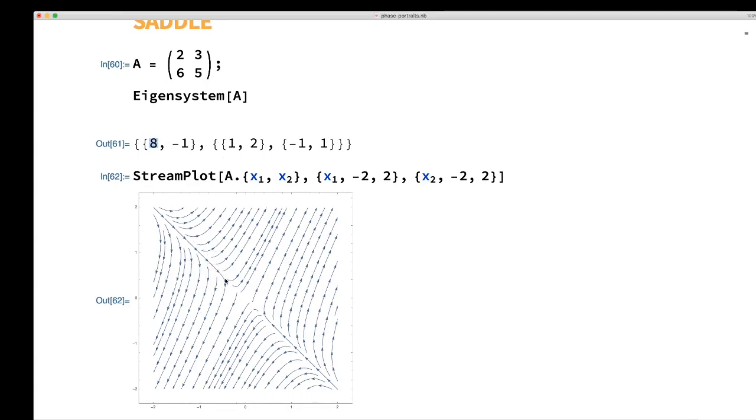After a little bit, you go off either positive or negative in the direction of this one-two eigenvector. So everybody ends up looking like that. Solutions tend to swoop in towards the origin and then peel away again.